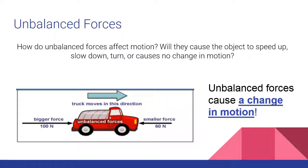If we look at this truck as an example, if it's driving with a force of 100 newtons to the right and there's some friction on the road that is creating a force of 60 newtons in the opposite direction, since they're opposites they are unbalanced and the net result is that the truck will move in this direction because its force is greater than the smaller force pushing against it.